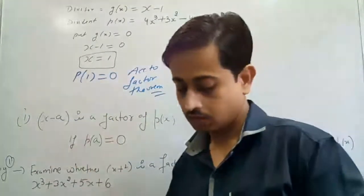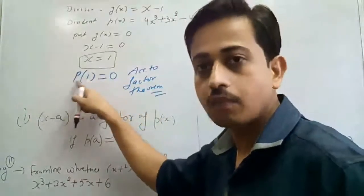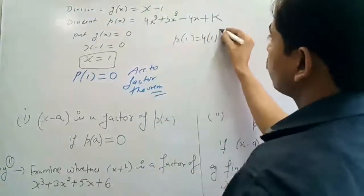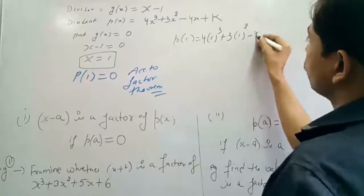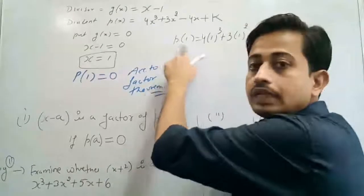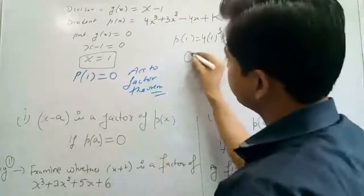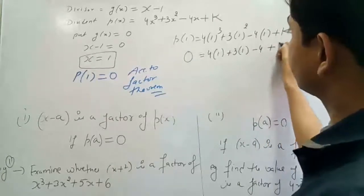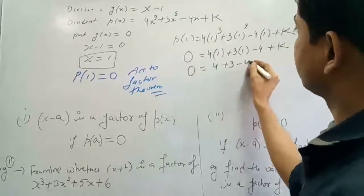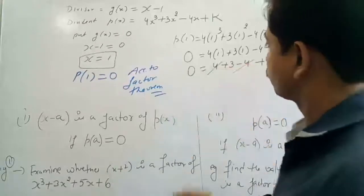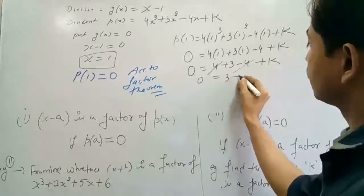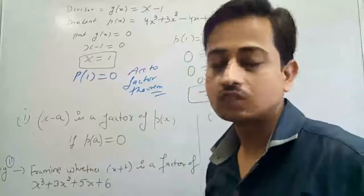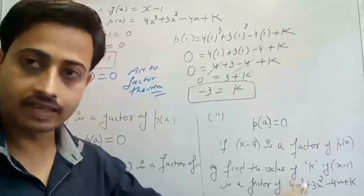Solving: put x = 1 into P(x). P(1) = 4(1)³ + 3(1)² − 4(1) + k = 0. So 4 + 3 − 4 + k = 0. The +4 and −4 cancel out, giving 3 + k = 0, so k = −3. That is your final answer. This is the second case of the Factor Theorem.